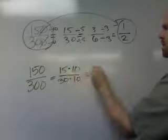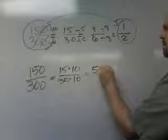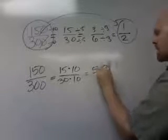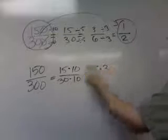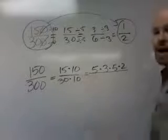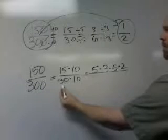So 15 becomes 5 times 3, and I don't like the little x, I like the dot. And then 10 is 5 times 2 over, and then in the denominator we've got 30 becomes 6 times 5.